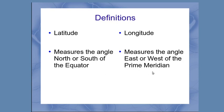Latitude is north or south of the equator, and longitude is east or west of the prime meridian. Those are the definitions in words, but what we really want to see is those on the globe in terms of a picture.